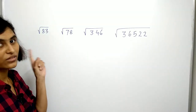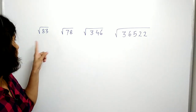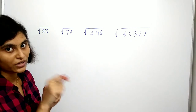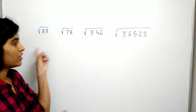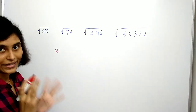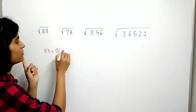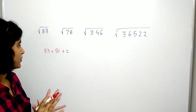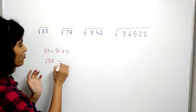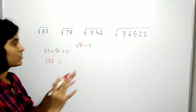Here I have a number 83 and we want to find the square root of 83. The first step is you just take a number which is close to 83 and which is a perfect square number. Clearly the number 81 is a perfect square number which is close to 83. So you write 83 as 81 plus 2. Now the next step is you just take the square root of 83.